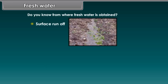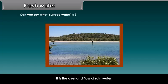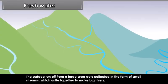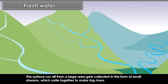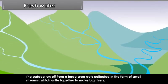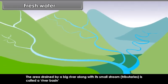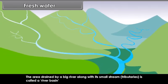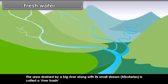Fresh water is obtained from surface run-off and groundwater. Surface water is the overland flow of rainwater. The surface run-off from a large area gets collected in the form of small streams, which unite together to make big rivers. The area drained by a big river along with its small streams and tributaries is called a river basin.